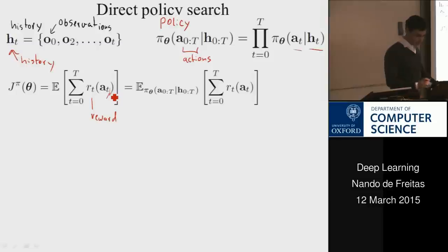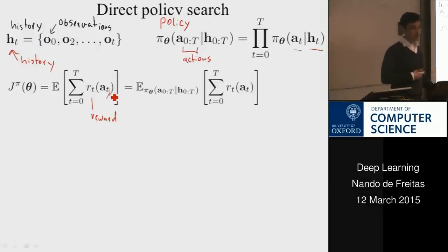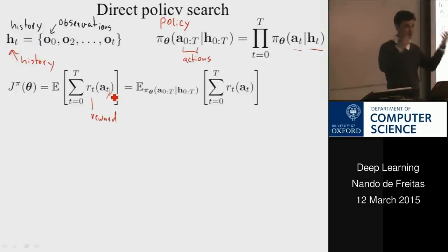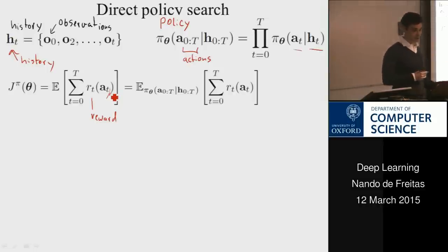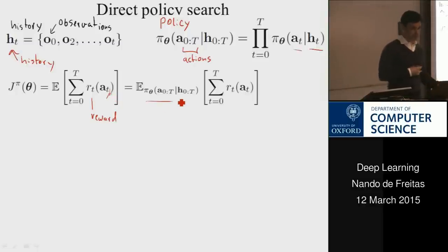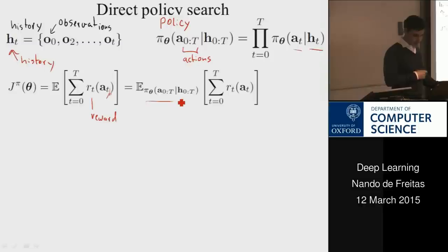What we want to do is maximize the expected reward — regardless of what future actions will be, over all possible action sequences, we want the best possible reward. That's why we marginalize to get rid of the variable A. That's the setup.